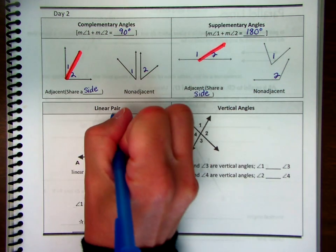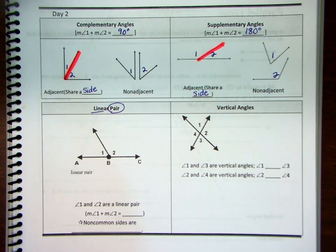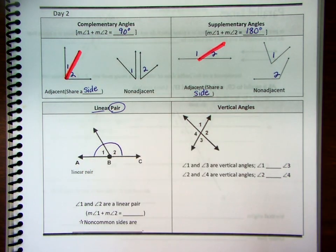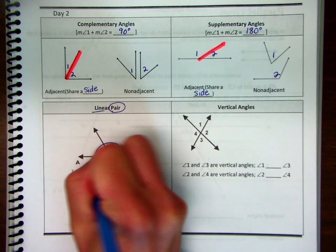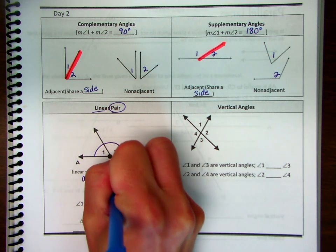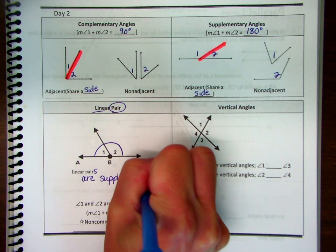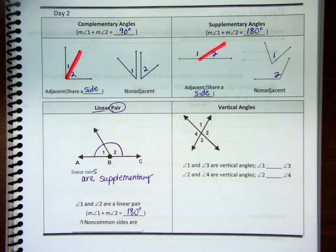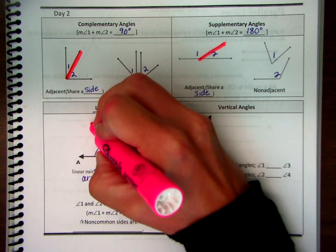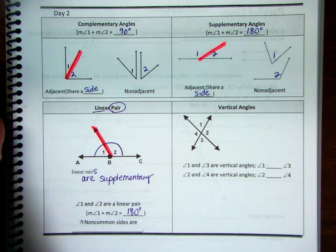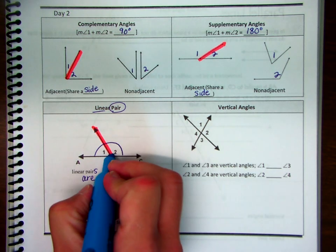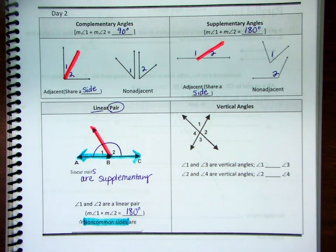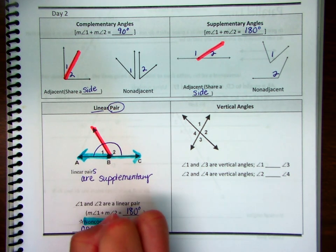A linear pair — if we break it down — is a pair of angles along a straight line. Angle one and angle two, if we trace those angles, it is half of the circle. So linear pairs are supplementary, meaning their measures add up to 180 degrees. The non-common sides or rays would be ray BA and ray BC, and those two sides are opposite rays as they form a straight line.